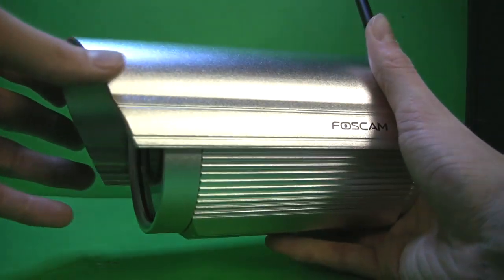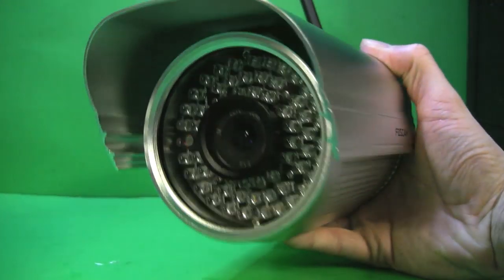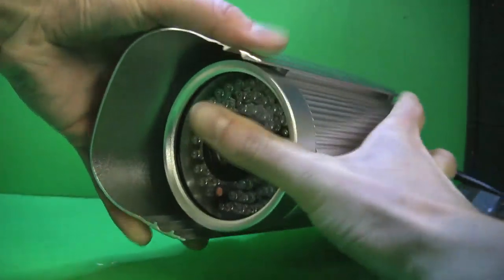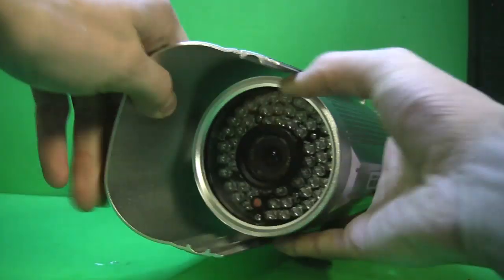This is how you change your 12mm Foscam lens to 2.8mm. First, remove the sunshade. This makes it easier for you to change your lens out.